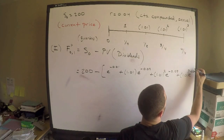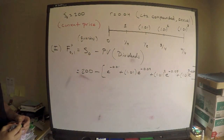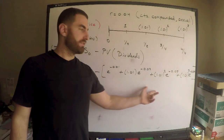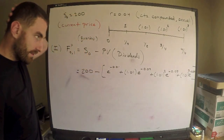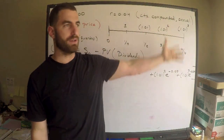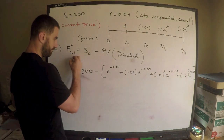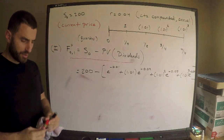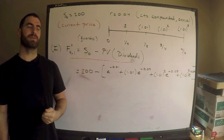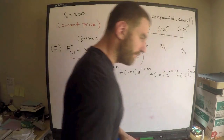Finally, bring 1.01³·e^(-0.04·1) = 1.01³·e^(-0.04) back one full year. You can see this forms a geometric sum, which is actually easier than the forward price case for identifying the common ratio. If we had more discrete dividends over a longer period, you'd compute a geometric sum. But regardless, this is the main concept for answering questions about prepaid forward prices. You should get 196.04.